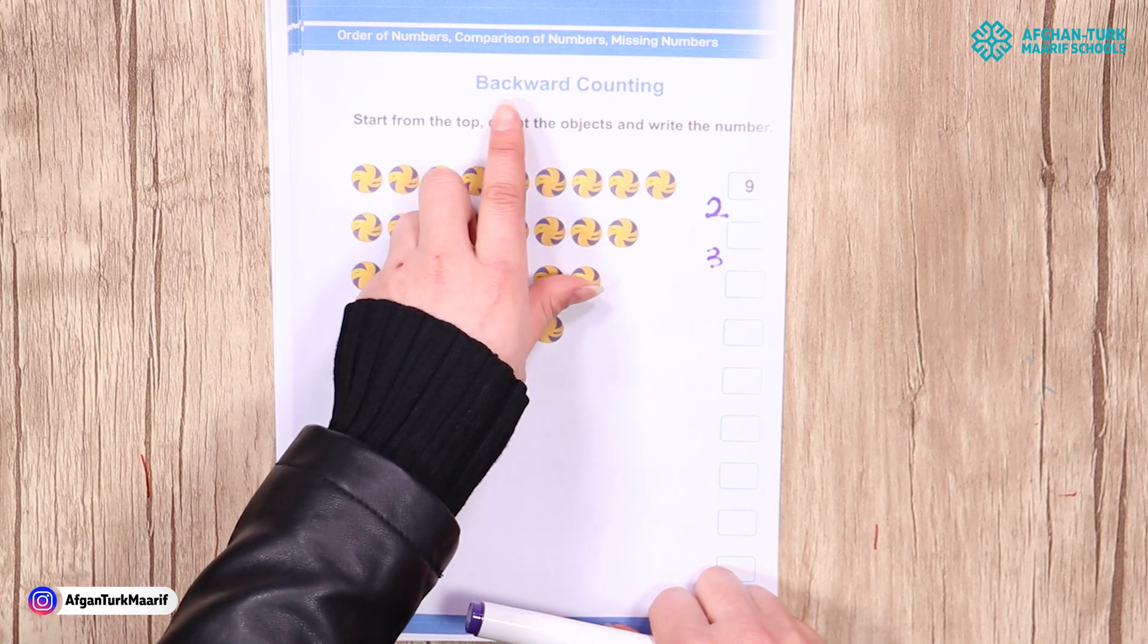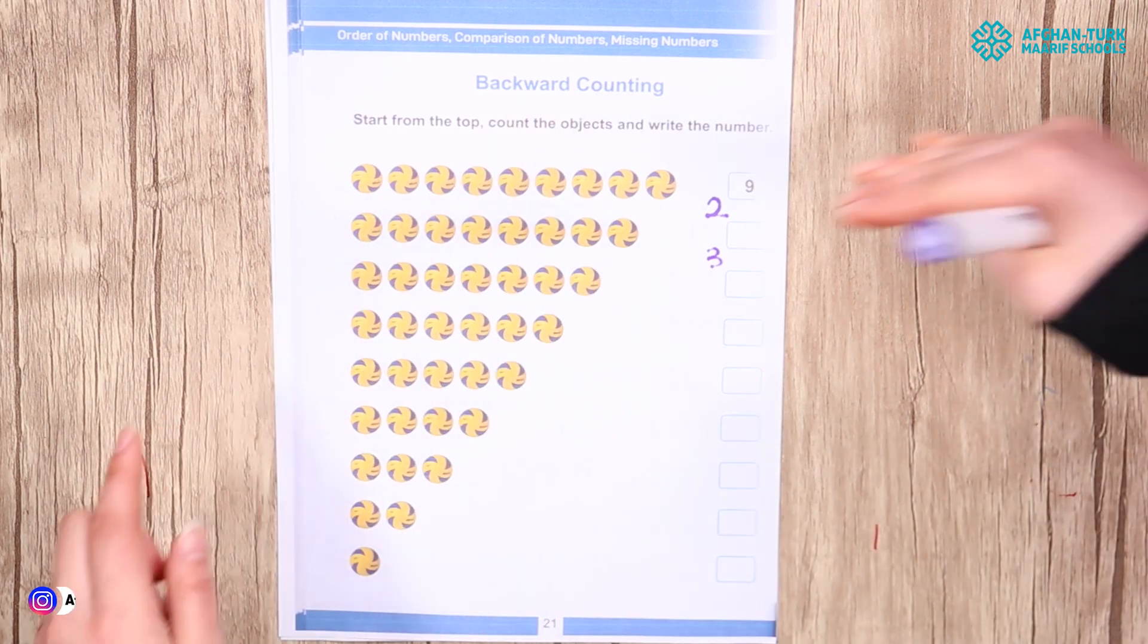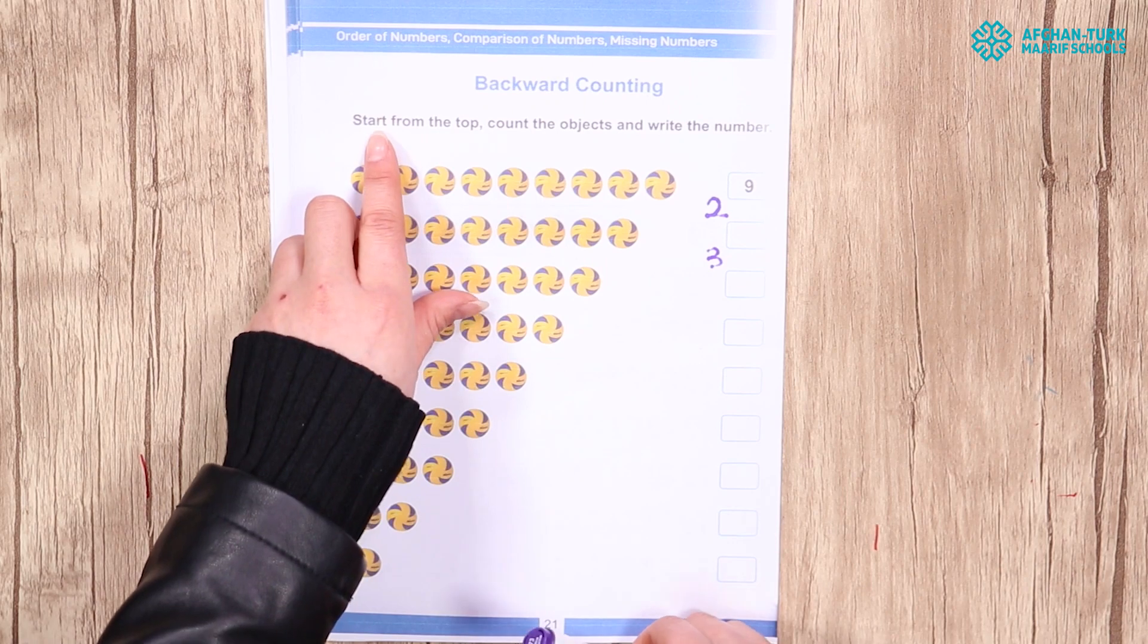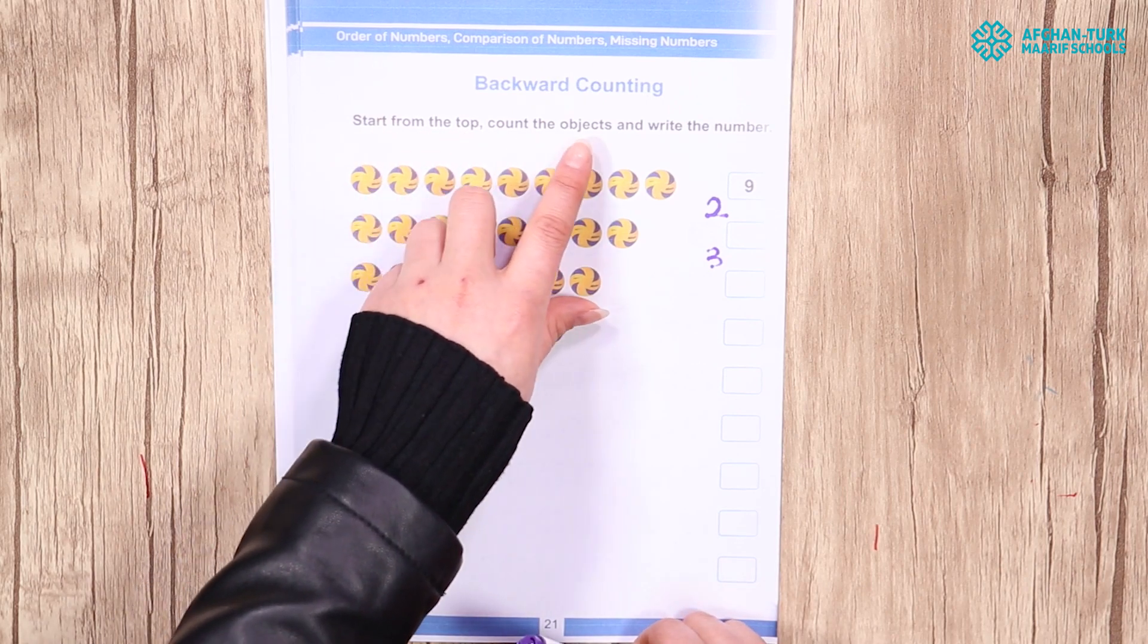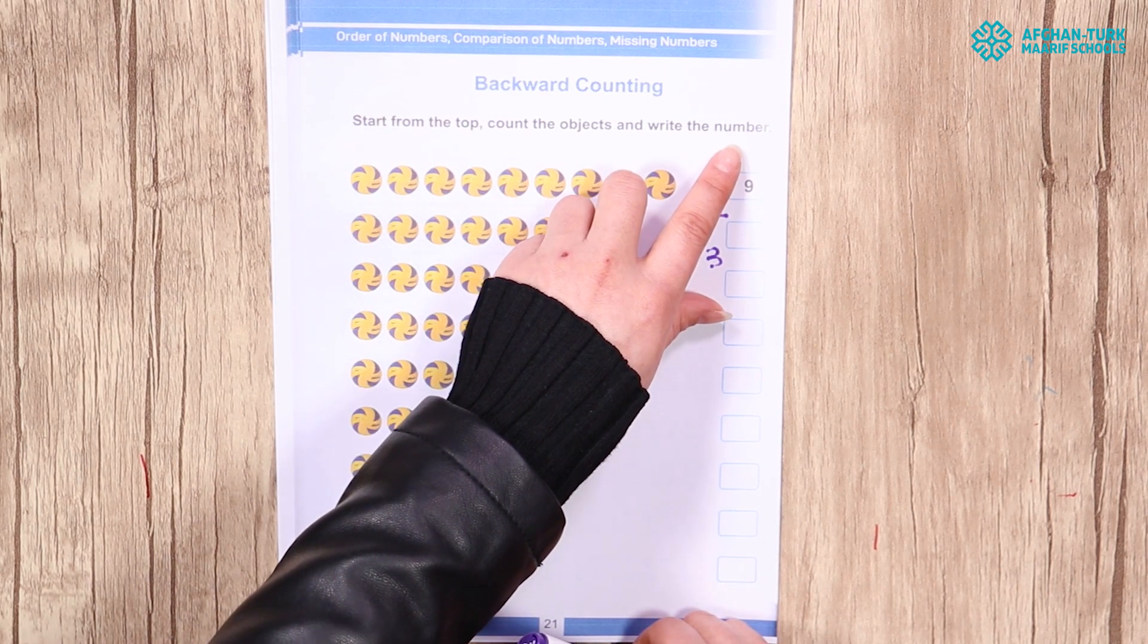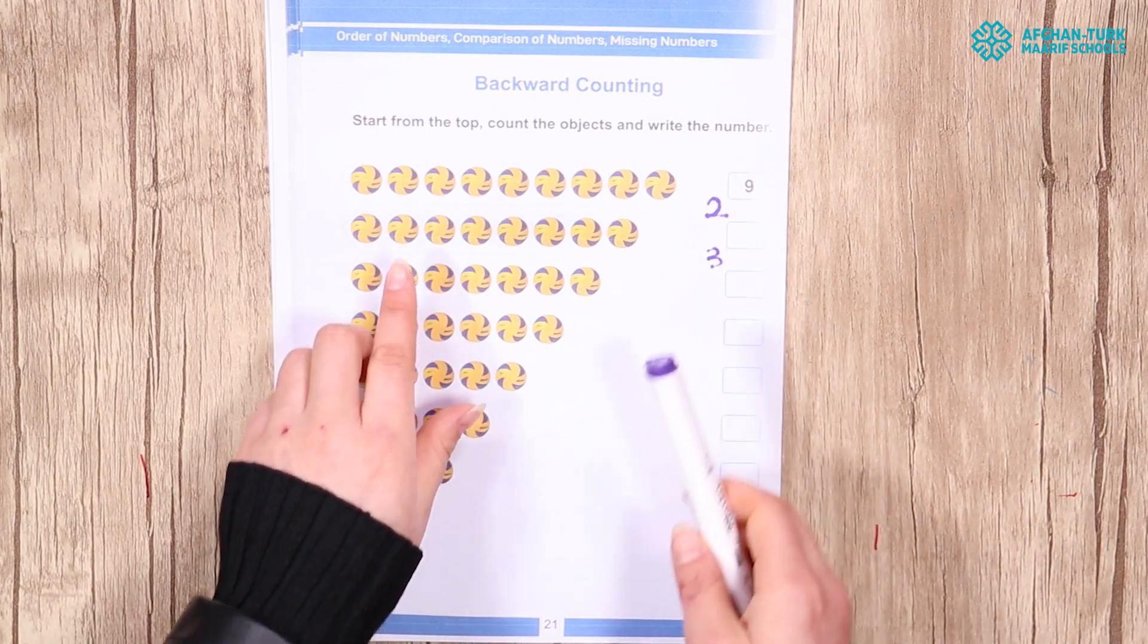Backward counting. It means comes down. Starts from the top. Count the objects and write the numbers.